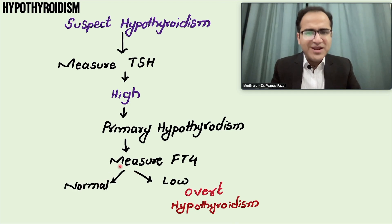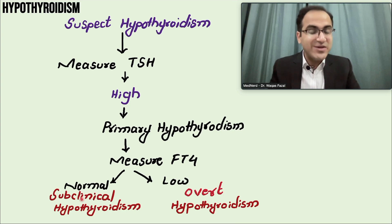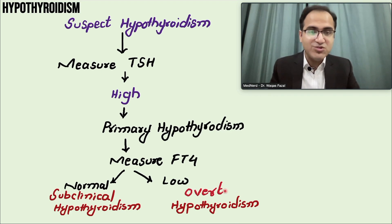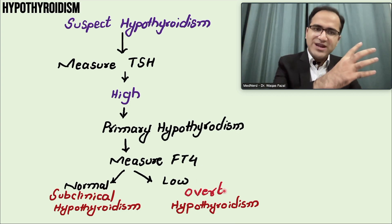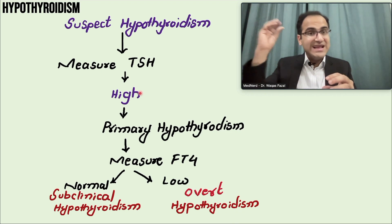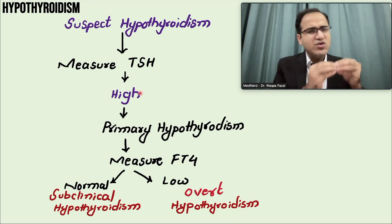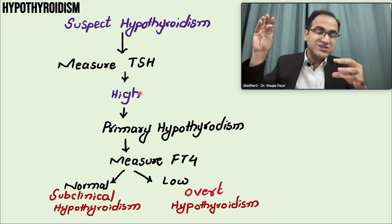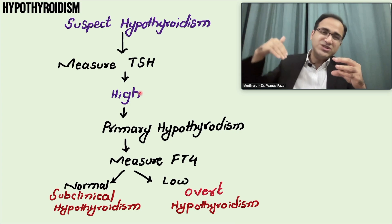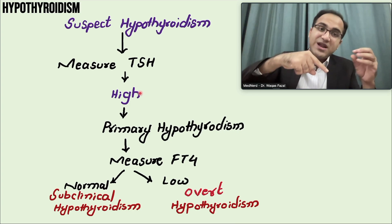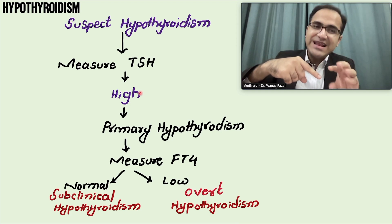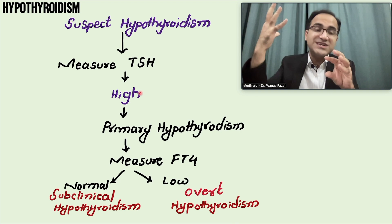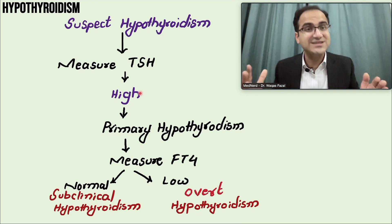Now, what if the free T4 levels are normal? If the free T4 levels are normal, it means that the patient is having subclinical hypothyroidism. Subclinical hypothyroidism means that the patient has not yet developed overt hypothyroidism but is on the way, because the increased TSH from the pituitary gland is causing the thyroid gland to produce a normal amount of thyroid hormones — even though the gland cannot do so at a normal TSH level. So the TSH has to rise higher to produce the same amount of thyroid hormones. That is subclinical hypothyroidism.